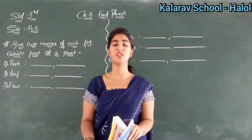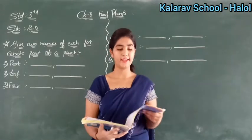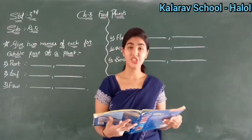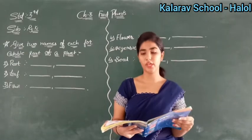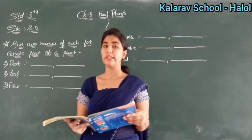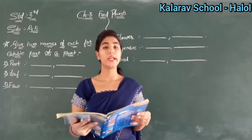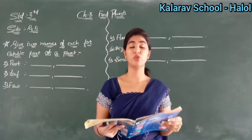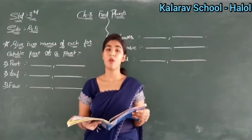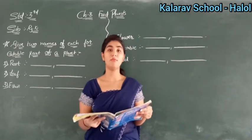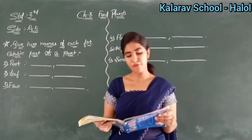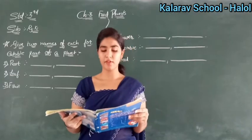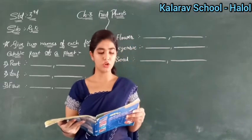Now we are moving further with chapter number 8, that is Food Plants. Now see here, vegetables are good for health. We have studied that we should eat our vegetables. All the vegetables we must eat so we can get proper proteins from each vegetable. They are full of minerals and vitamins which nourish the body. Green vegetables are good for health.